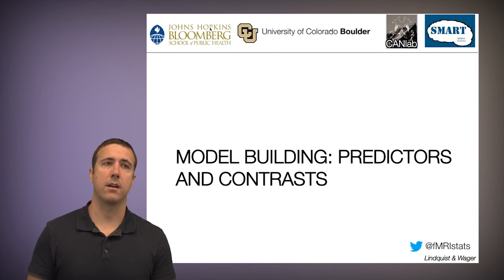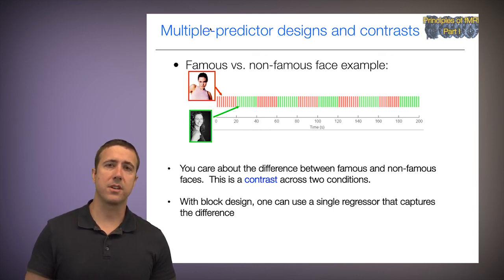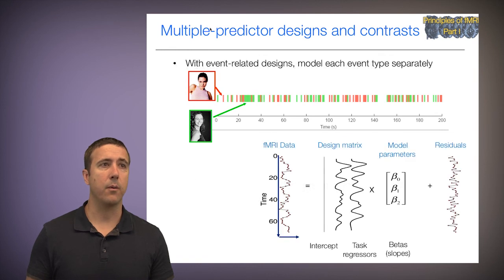So let's look now at model building, and we'll look specifically at multiple predictors and at contrasts. Let's go back to our famous versus non-famous face example. It's a block design. What we care about is the difference between famous and non-famous faces. This is a contrast across those two conditions. With a block design, one can use a single regressor that captures that difference. But what happens if we have an event-related design? We have to model each event type separately in the GLM. Now we end up with a design matrix that has one regressor for famous and one regressor for non-famous faces.